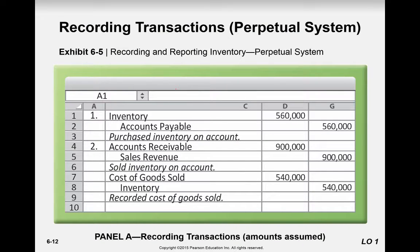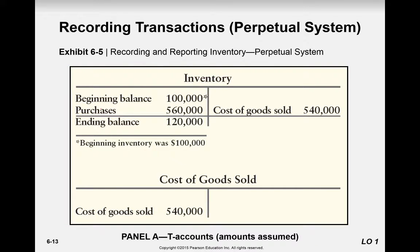When purchasing inventory, we increase inventory with a debit and credit accounts payable — accounts payable is for our vendors while accounts receivable is for our customers. When we sell inventory on account, we debit accounts receivable and credit sales revenue. If it were cash, we'd replace accounts receivable with cash. We also record the reduction of inventory by debiting cost of goods sold (an expense on the income statement) and crediting inventory (a balance sheet asset). To find gross profit, take sales revenue minus cost of goods sold — giving us $460,000 in this example.